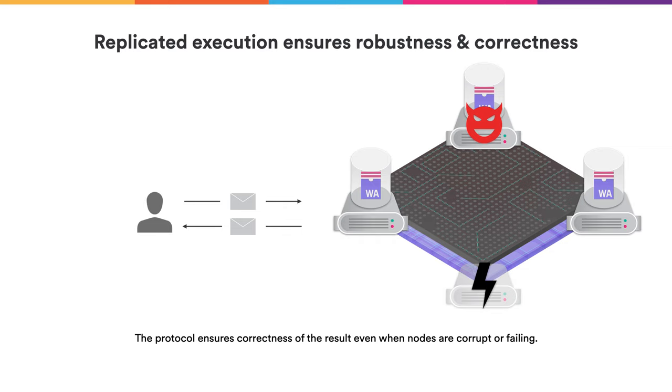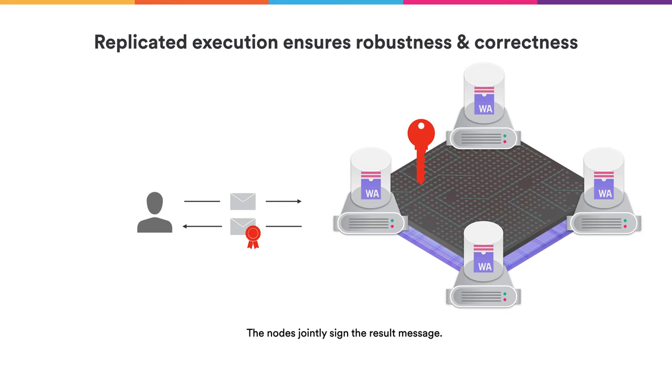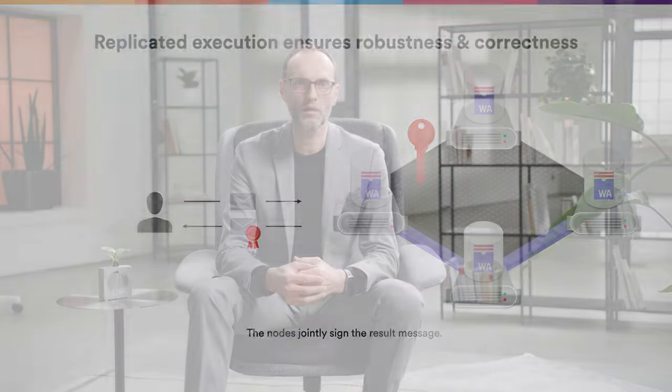When the user talks to the Internet Computer, it wants to be sure the result is authenticated so it cannot be modified in transit. To this end, the Internet Computer has a public key and a corresponding signing key. After computing the results of a canister execution, the nodes sign that result jointly using threshold signature schemes. Every node has their own secret key share, and they each produce a partial signature on the computed result. When more than two-thirds of them have agreed the result is correct and have signed it, those signatures are combined into a full certificate on the message that is sent back to the user.